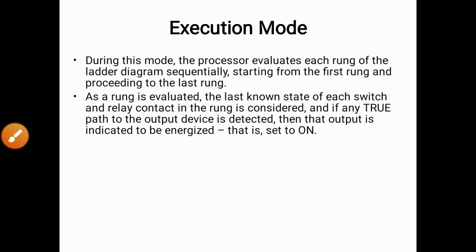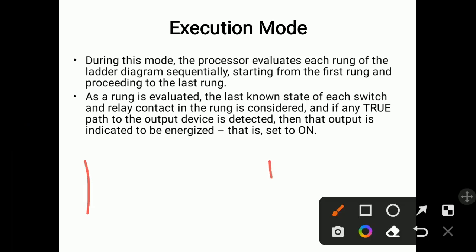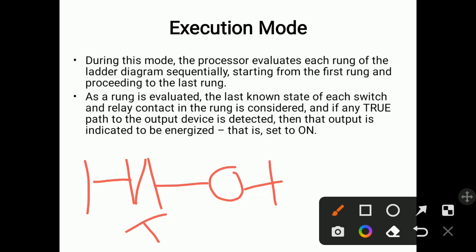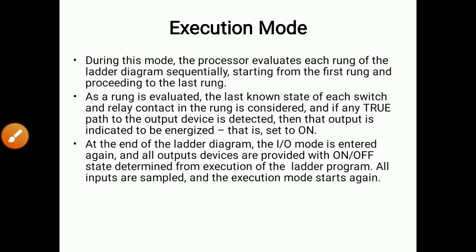As each rung is evaluated, the last known state of each switch and relay contact in the rung is considered. If any true path to the output device is detected, the output is energized and set to on. For example, if a switch in a rung is true, the output device connected to it gets on. At the end of the ladder diagram, the input/output mode is entered again and all output devices are provided with their on/off state as determined from execution of the ladder program.